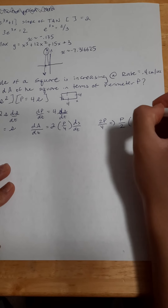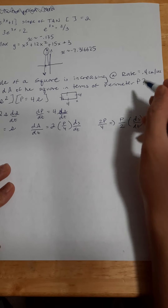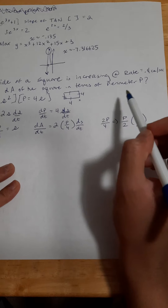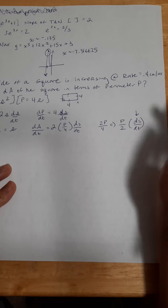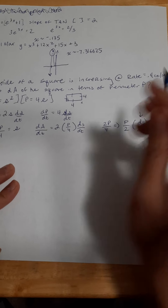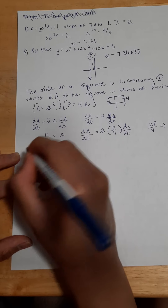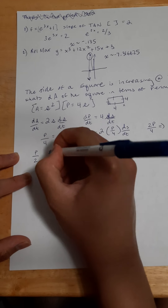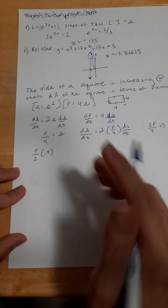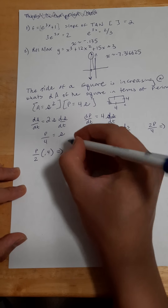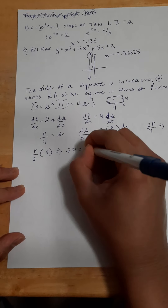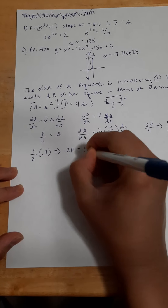We're given this value because, looking at the question, the side of a square is increasing at a rate of 0.4 centimeters per second — so this is dS/dt. We plug in 0.4: dA/dt = (P/2) × 0.4. Doing the multiplication and simplifying, this gives us 0.2p as the rate of change of area. Going back to the question, we see that's answer B.